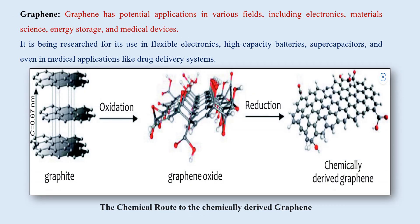Graphene is finding potential applications in several fields like in electronics, material science, energy storage and medical devices. This particular graphene nanomaterial has been researched for its use in flexible electronics, high-capacity batteries, supercapacitors, and even in medical applications like drug delivery systems.